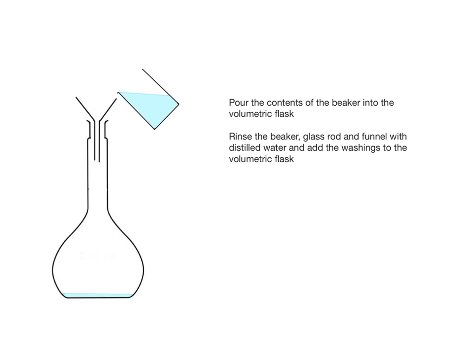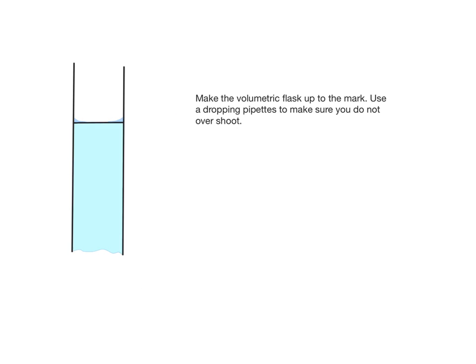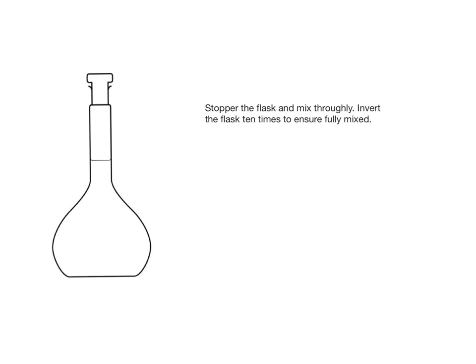Make the volumetric flask up to the mark using distilled water. For the final addition, use a dropping pipette to avoid overshooting. The bottom of the meniscus should sit on the line. Stopper the flask and mix thoroughly. Invert the flask at least 10 times to ensure it's fully mixed.